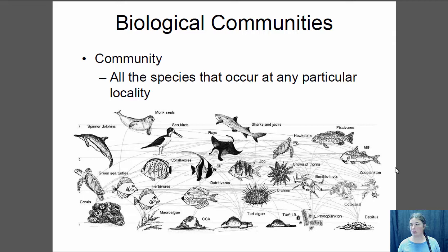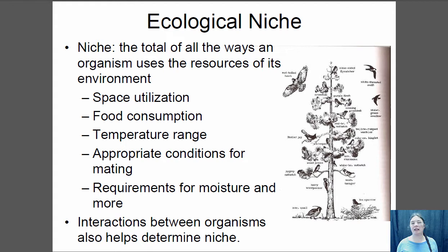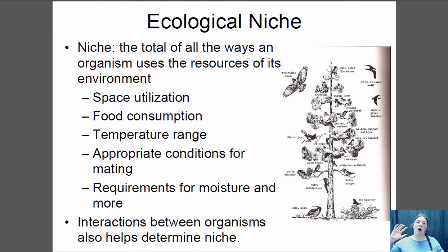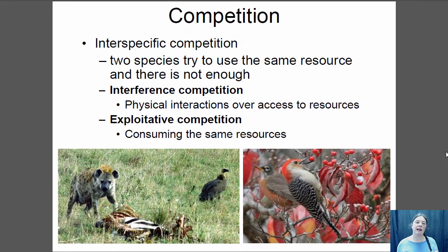One thing you need to know about animals within their community is what we call their ecological niche. Their niche is the spot that they take up within the community — all the ways the organism uses resources and everything that organism needs to survive. That includes space utilization, what food it eats, what temperatures it needs, appropriate conditions for mating, moisture requirements, all those abiotic factors, and also how it interacts with other species in its community. One of the most important interactions in determining the niche is competition.